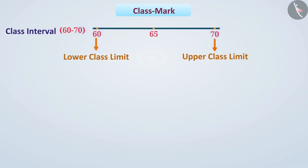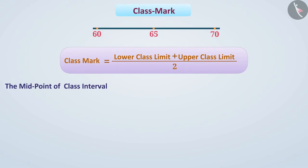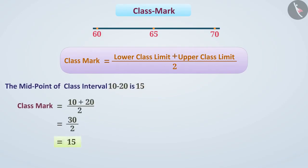For example, the midpoint of a class interval 10 to 20 is 15. That means the class mark of a class interval 10 to 20 is 15.